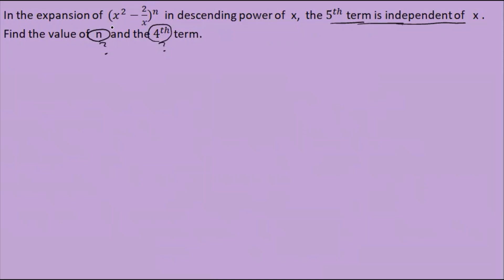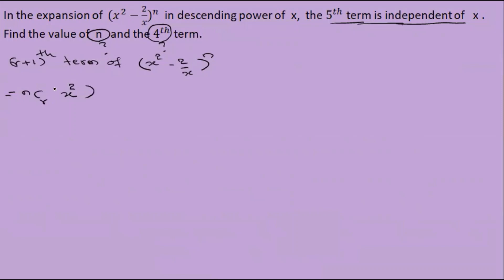For x plus y to the power n, and 1 plus x to the power n, the R plus 1 term of (x squared minus 2 by x) the whole power n is: nCr times (x squared) to the power n minus r, times (minus 2 by x) to the power r. This gives x to the power 2n minus 2r.